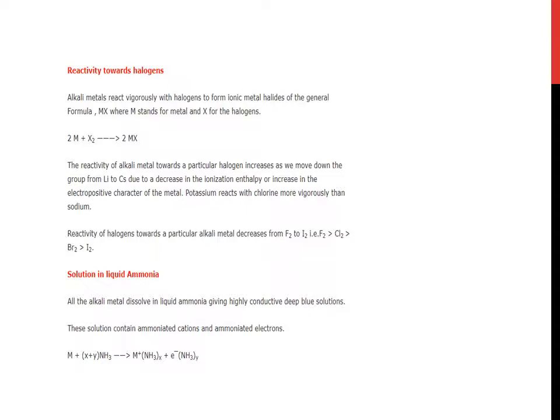Now, solution in liquid ammonia. This is a very important question—the question that appears in exams is why the ammoniated solutions give color. All the alkali metals dissolve in liquid ammonia giving highly conductive deep blue solutions. These solutions contain ammoniated cations and ammoniated electrons. Metal M when it reacts with ammonia solution, then ammoniated electrons and ammoniated metal ions are formed: M + (X+Y)NH₃ gives M⁺(NH₃)ₓ + e⁻(NH₃)ᵧ.